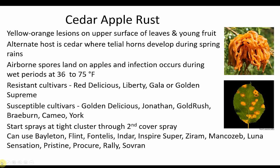Cedar apple rust is another fungal disease that spends part of its life cycle on apple trees and the other part on cedar. Because cedar trees are common in the Midwest, this disease is prevalent. In late spring, during rainy periods, yellowish-orange growths containing fungal spores called telial horns are visible on cedar trees. When conditions are right, the spores are carried by wind to apple trees. Orange to yellow spots are visible on infected apple leaves. Delicious, Liberty, Gala, and Golden Supreme are resistant to cedar apple rust, whereas Golden Delicious, Jonathan, Gold Rush, Rayburn, Cameo, and York are susceptible. Fungicide products listed here can be applied at tight cluster through the second cover spray.